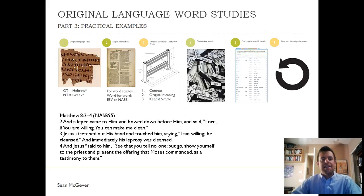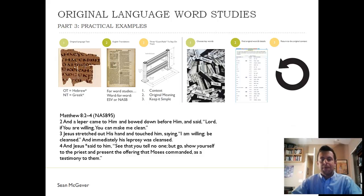We're going to do a practical example today, and we're going to look at Matthew chapter 8, verses 2 through 4. This is a story where a leper came before Jesus and he healed him. I wanted to take a closer look at one of the words and see how that might be helpful for our own understanding, and how we might pass that along in a talk or to our friends in a Bible study. I noticed one of our rules for finding a key word is to find a word that's repeated, and this word 'clean' is used. In verse 2, the leper says, 'you can make me clean.' Jesus, in verse 3, says, 'I am willing, be clean.' And then it says, immediately, his leprosy was cleansed.